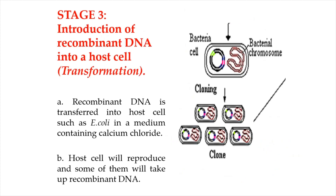Stage 3 is the introduction of the recombinant DNA into a host cell, which is known as transformation. The recombinant DNA is transferred into host cells such as E. coli in a medium containing calcium chloride. Calcium chloride facilitates the binding of the plasmid DNA to the surface of the host cell.